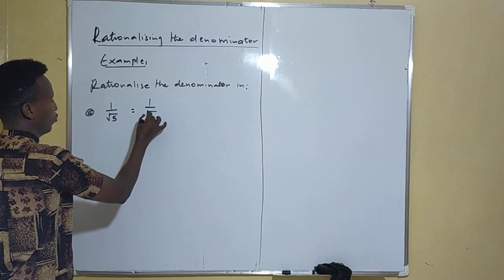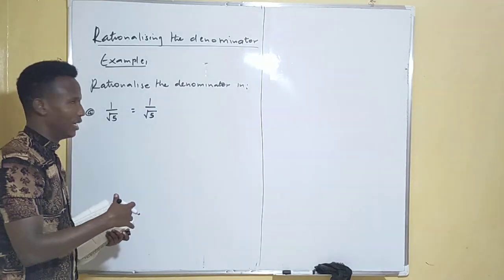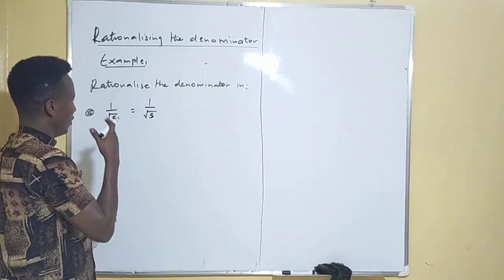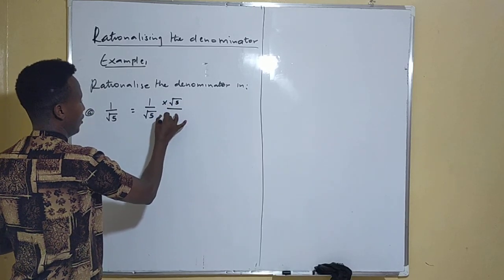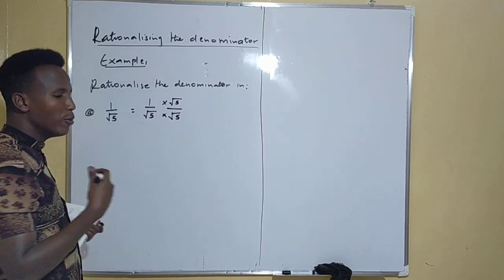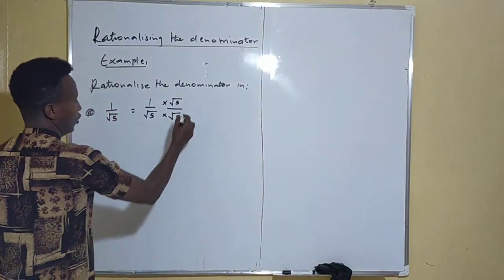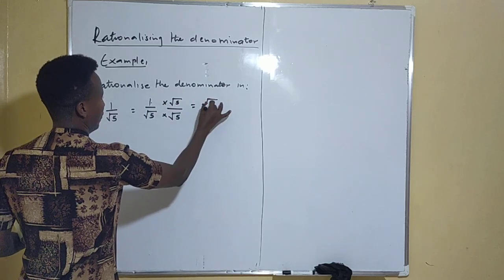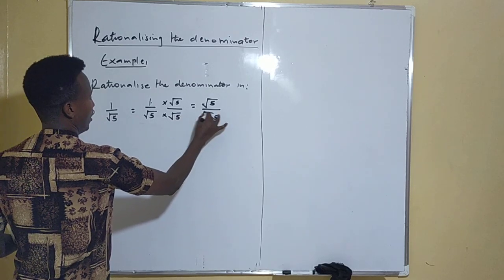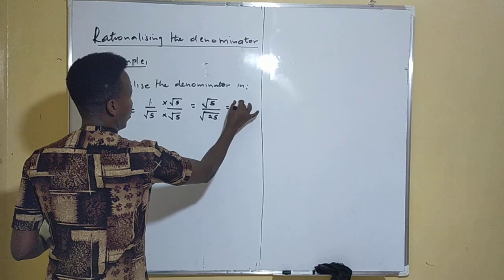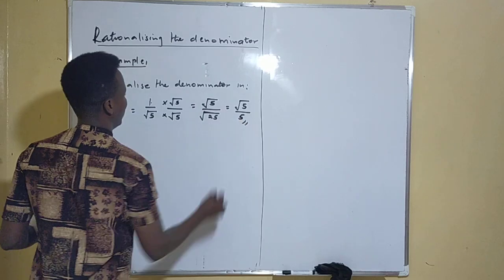You're going to say 1 over root 5, which is the one given. For you to rationalize, you're going to multiply both the numerator and the denominator by the denominator given. So this side you're going to say times root 5, and down here also times root 5. So 1 times root 5 is root 5, divided by root 5 times root 5 is root 25. The square root of 25 is 5, so the answer is root 5 over 5.